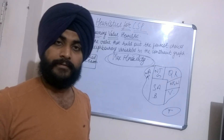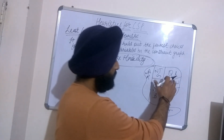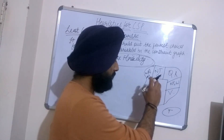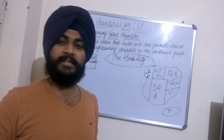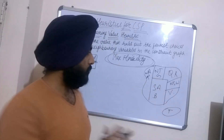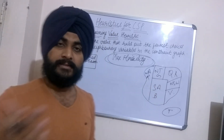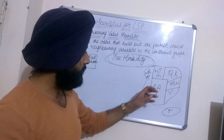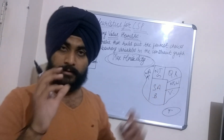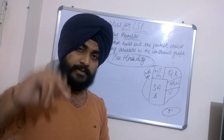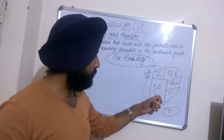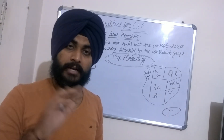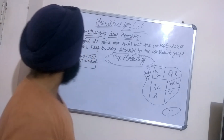The value assigned should be such that the constraints on the remaining variables are minimized — meaning other variables should still be able to get values from their domain. The domain values of other variables should not be ruled out. This is what the least constraining value heuristic tells us.